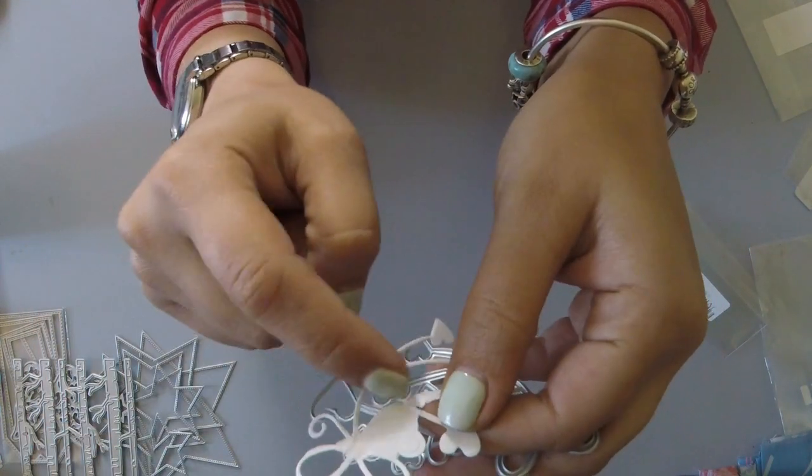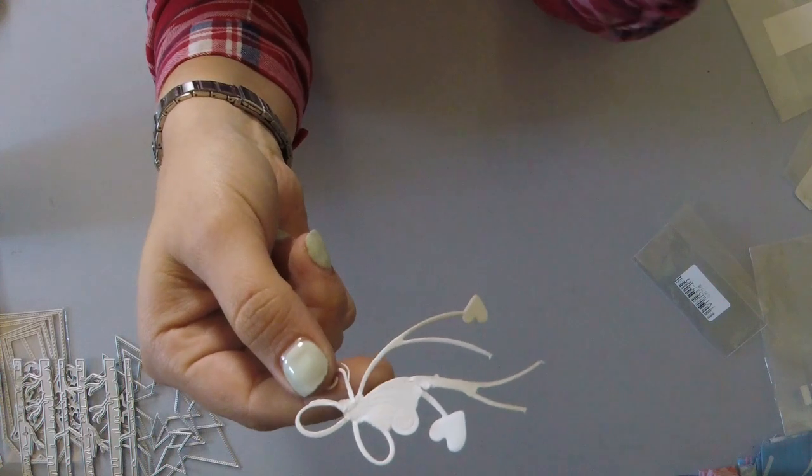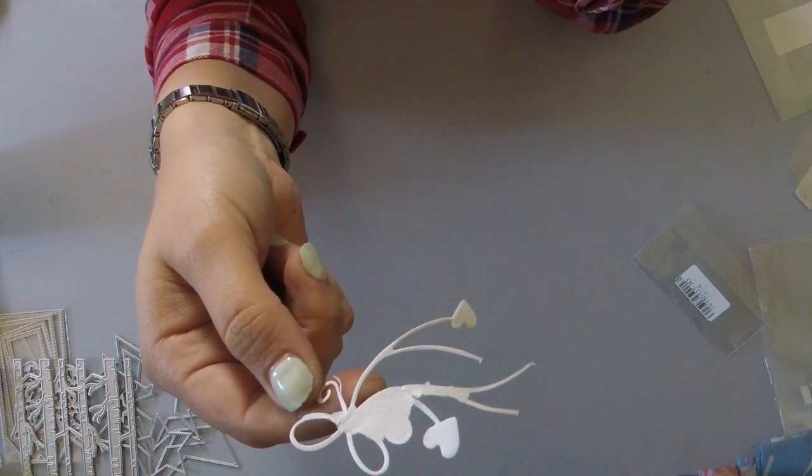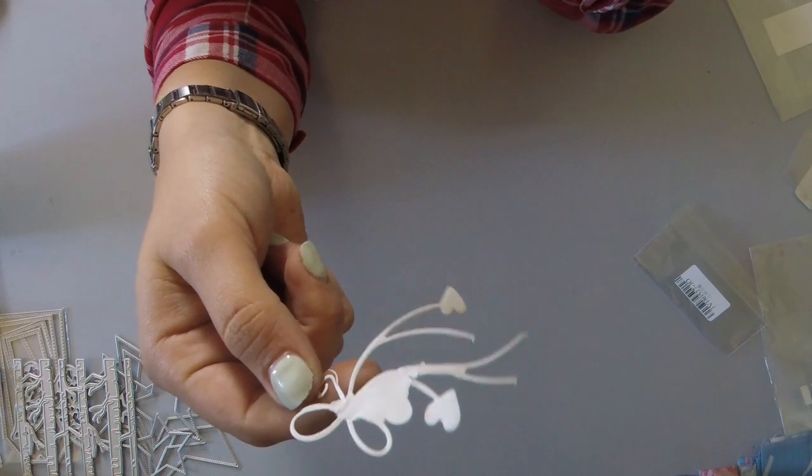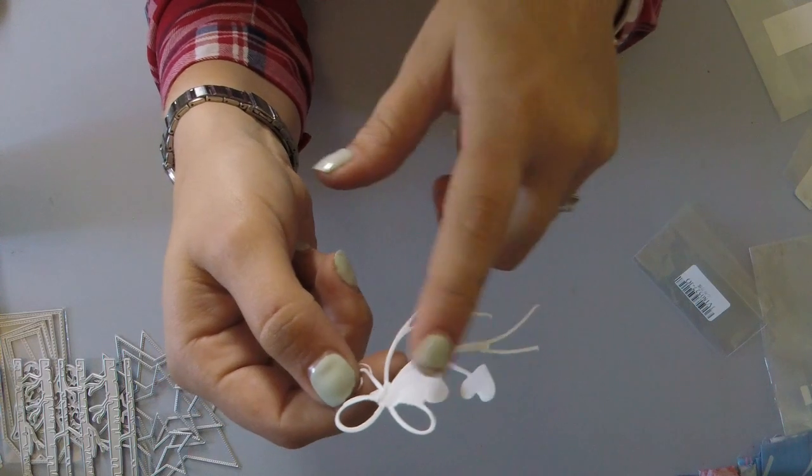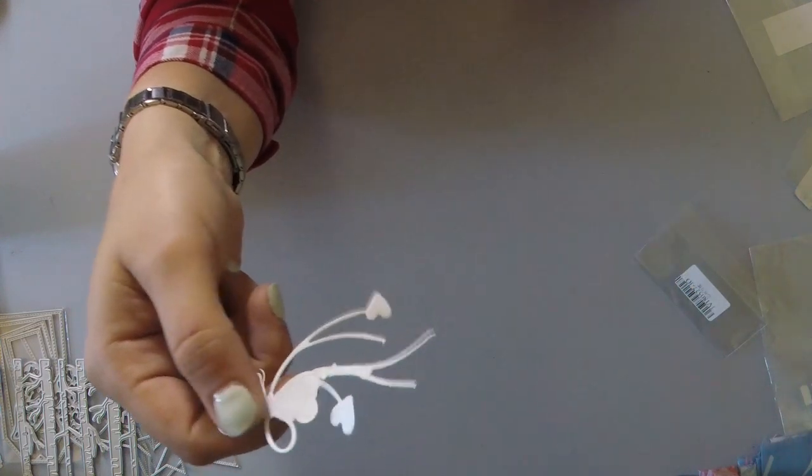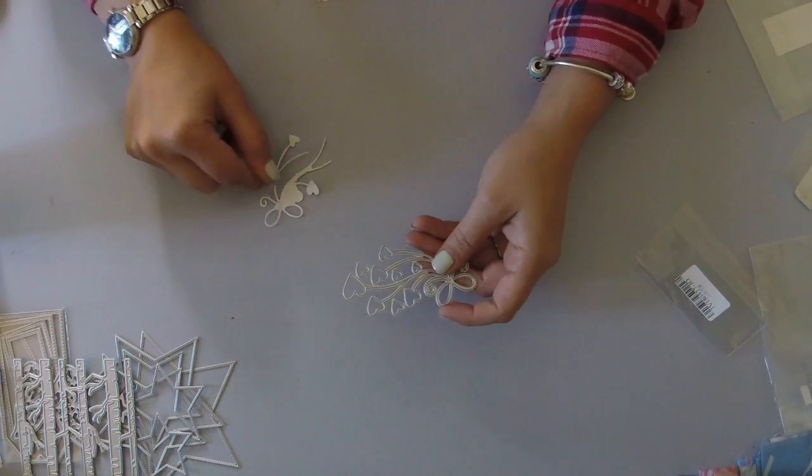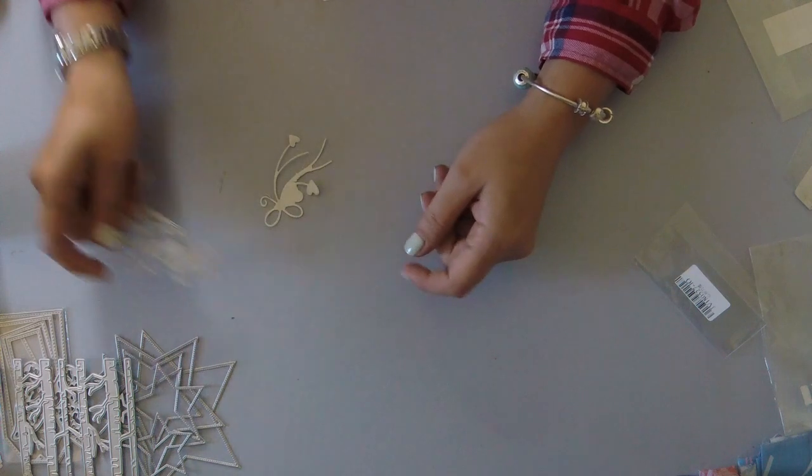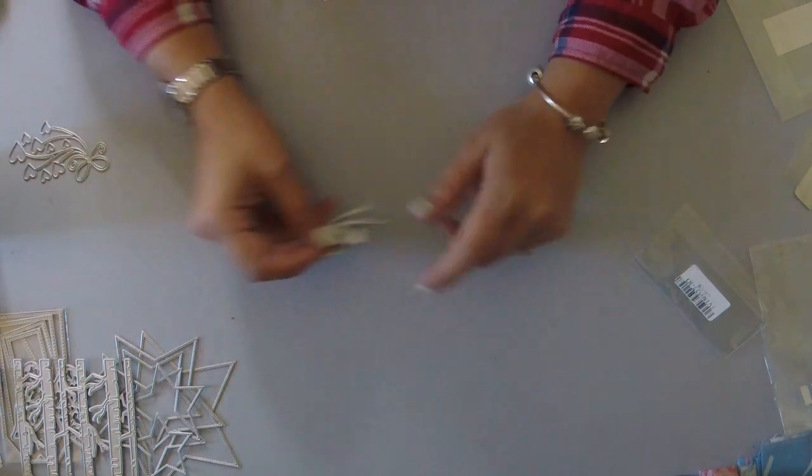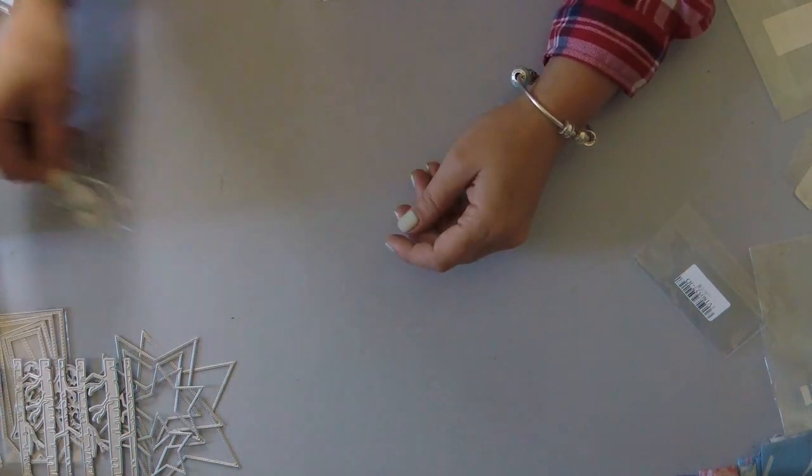So as you can see, I can't, and I ran this through my cuddle bug, I don't know, maybe 10, 12 times trying to get these fine little details out. Eventually I wound up just cutting off the hearts that I was able to get out and using them on another project, but I had problems with this die and I had problems with another die. And all of my dies that are very intricate, I seem to have issues with.